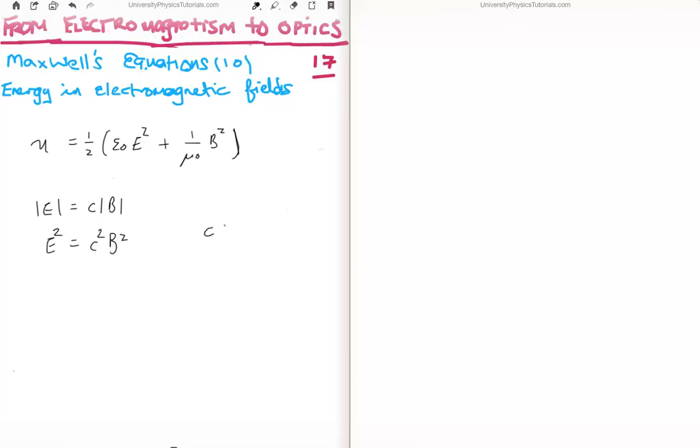But we also know that the speed of light C is equal to one over the square root of mu zero epsilon zero. So putting that together what we find is that E squared over mu zero is equal to epsilon zero E squared.